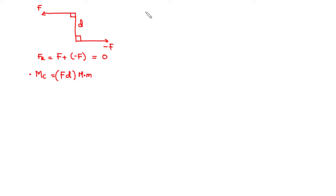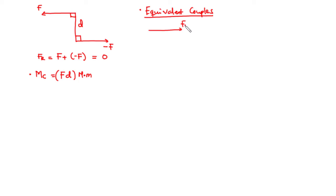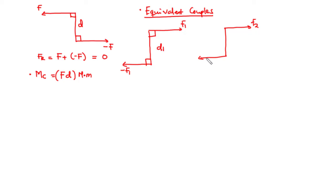Let's move on to equivalent couples. Two couples are said to be equivalent if they produce a moment with the same magnitude and direction. Let's assume we have a first couple with force F1 and negative F1, with perpendicular distance D1, and a second couple F2, negative F2, with perpendicular distance D2.